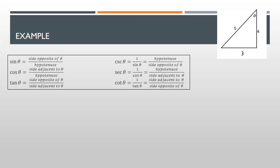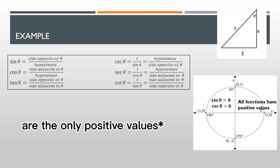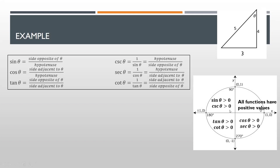Now that we have the values of the three sides, we can find the other five trigonometric functions. Since theta terminates in quadrant 3, only tangent and cotangent functions have positive values and the rest are negative. In the unit circle: in quadrant 1, all functions have positive values; in quadrant 2, sine and cosecant are only positive; in quadrant 3, tangent and cotangent are the only positive functions; and in quadrant 4, only cosine and secant are the positive values.